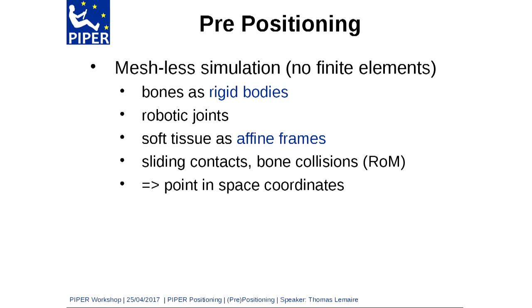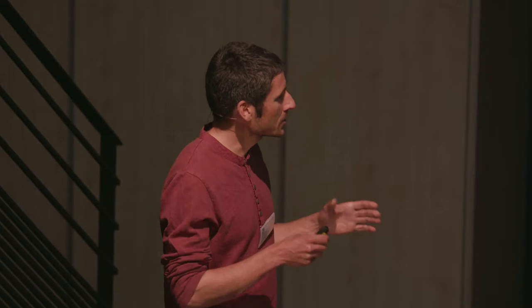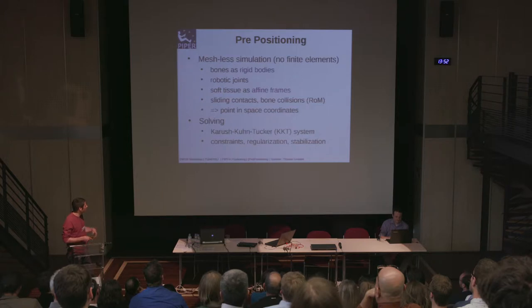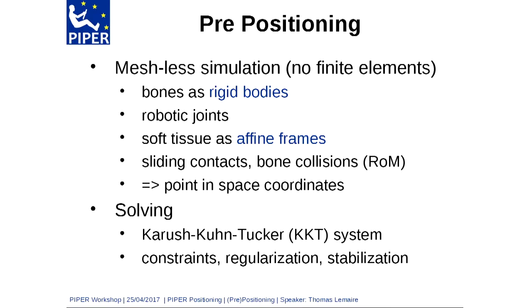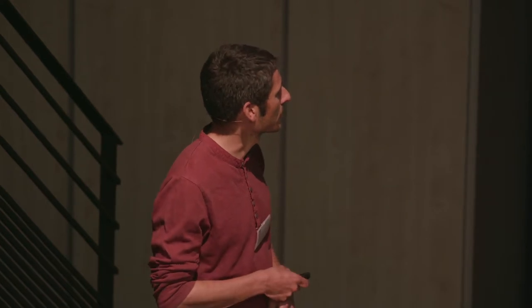We also have support for sliding contacts — for instance, the hip of the GHBMC is modeled this way. Bone collisions limit the range of motion of your HBM. Point coordinates in space are computed from a linear combination of the degrees of freedom: affine frames and rigids. We build a KKT system with state-of-the-art numerical methods to solve constraints, regularize, and stabilize the system — all implemented in the SOFA library.